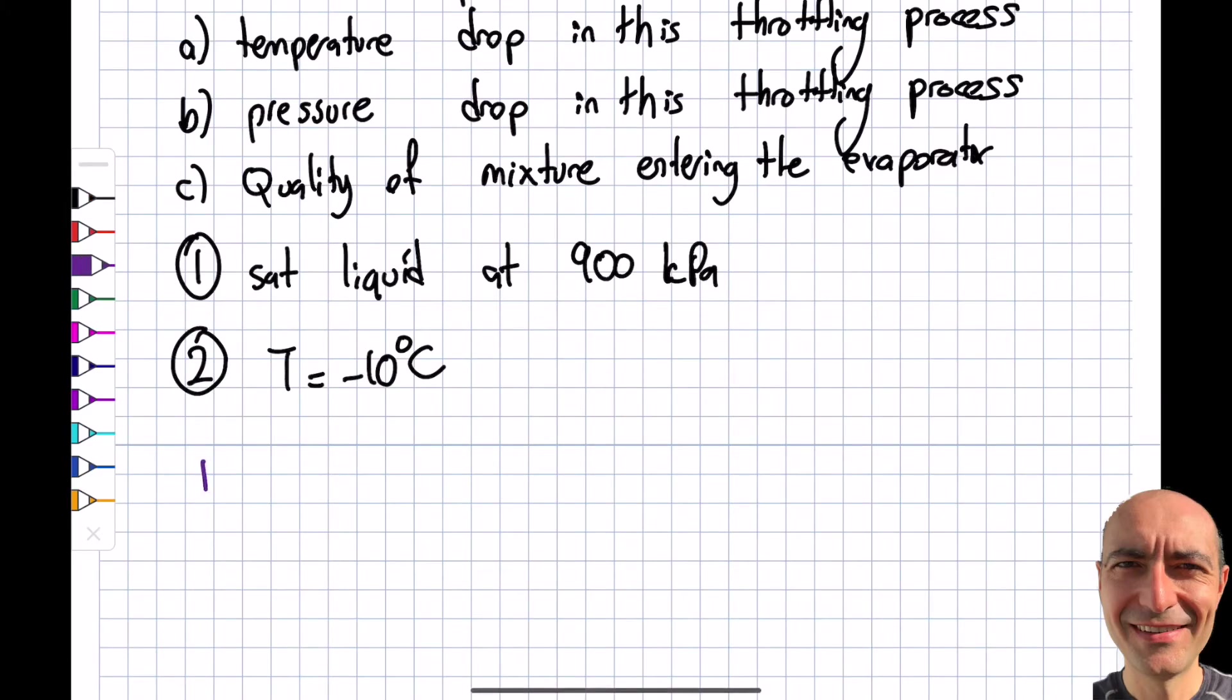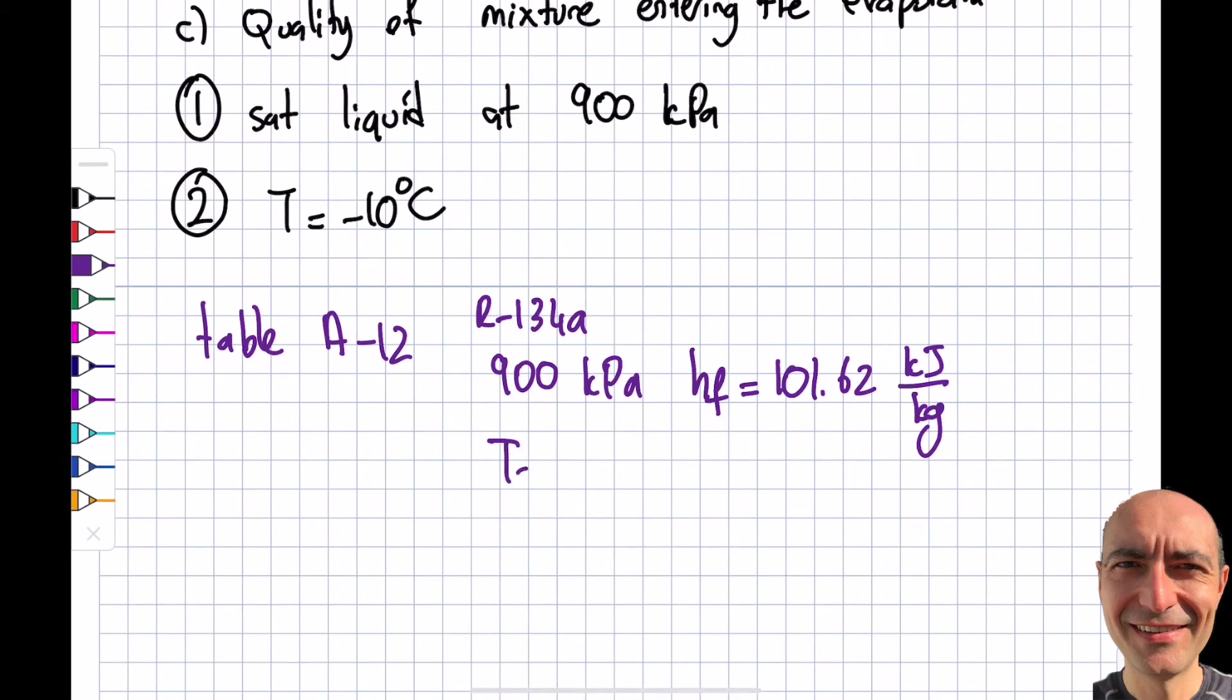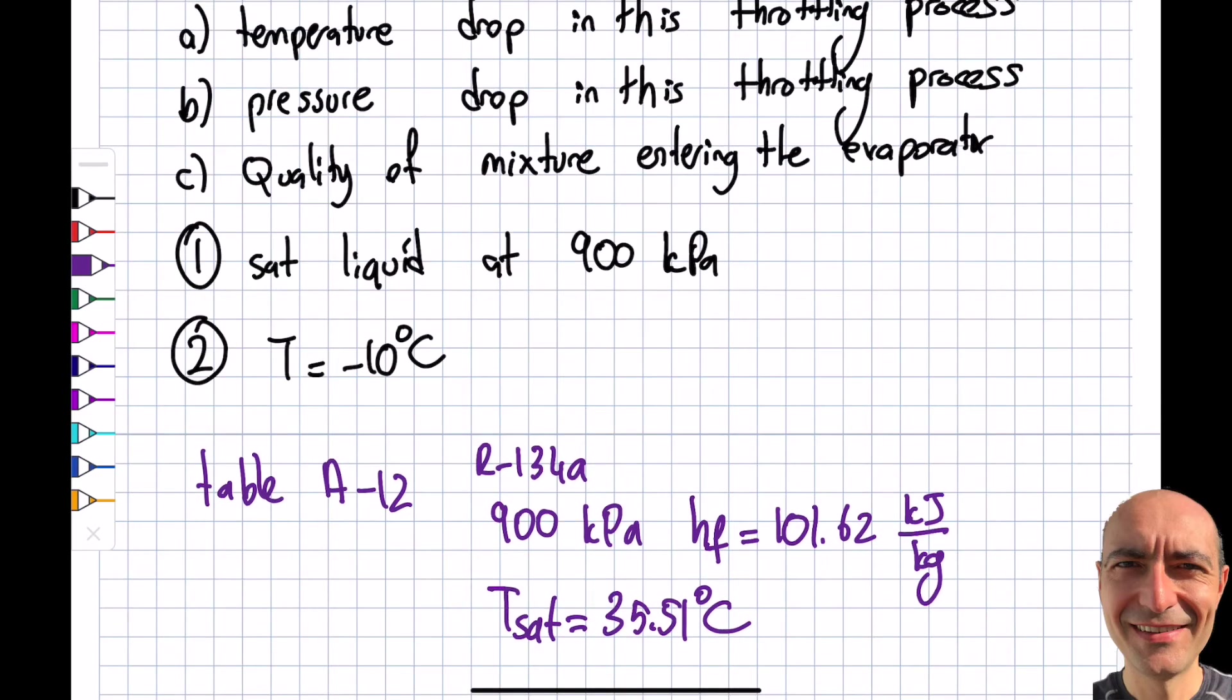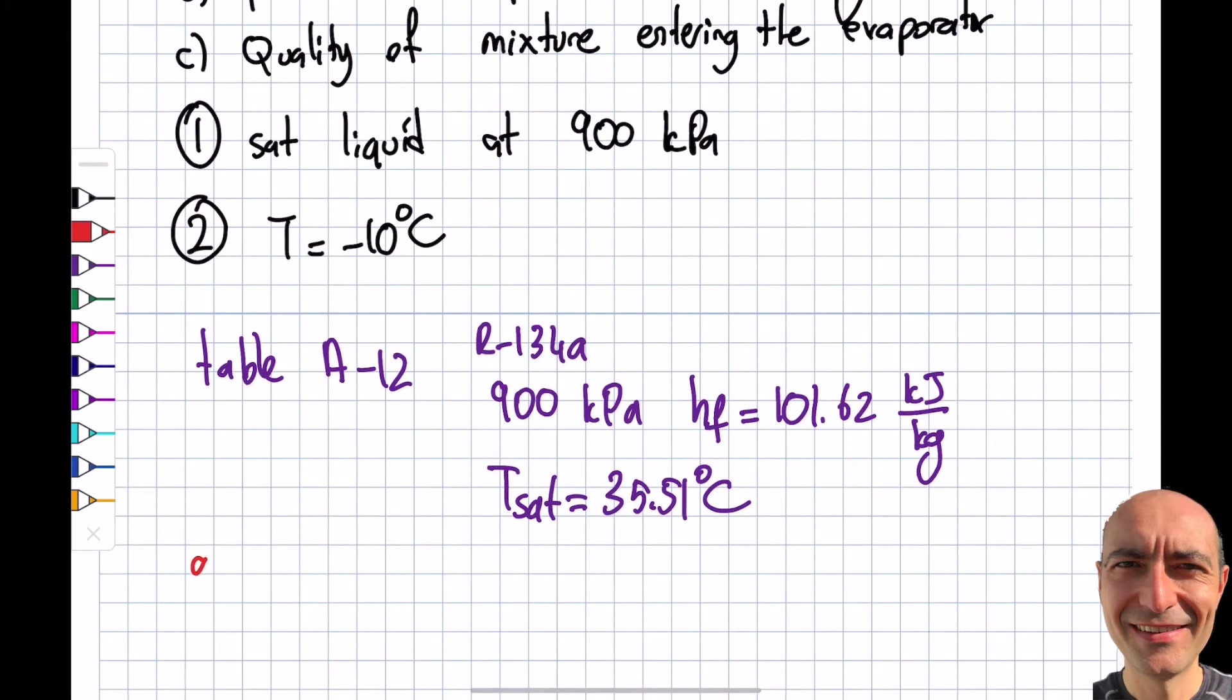All right, so let's get to business and do this. So I can go look at the table A-12. And this lists R-134a as a function of pressure. So I look at the particular line that says 900 kilopascals as a saturated liquid. What does that mean? So I have to look at h_f value and that turns out to be 101.62 kJ/kg. And at the same line you will see your saturation temperature corresponding to this particular 900 saturation pressure is 35.51°C. So now you can see I can answer question part a - temperature drop. So my ΔT would be 35.51 is entering and the exit is -10°C. So that comes to 45.51°C.